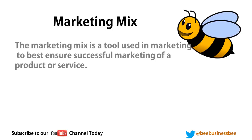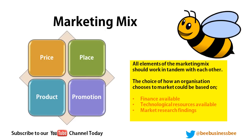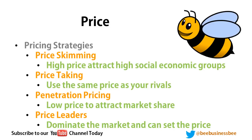How you appeal to your target audience depends on their needs and wants, which comes down to the marketing mix — a tool used to ensure successful marketing of a product or service. The marketing mix comprises the four Ps: price, place, product, and promotion. All elements must work together, considering available money, technological skills, and what your market research tells you.